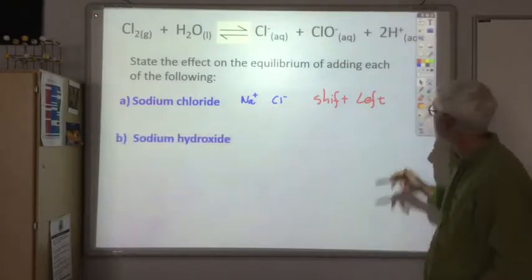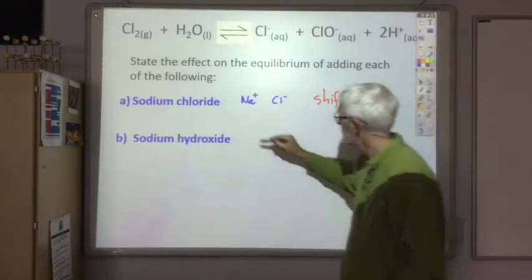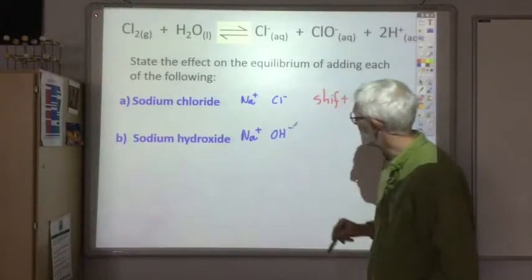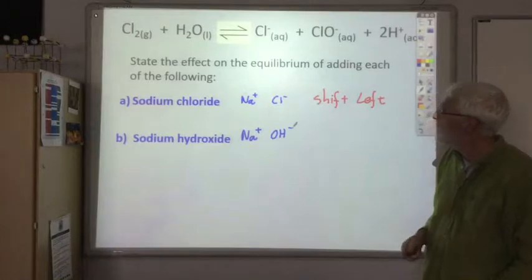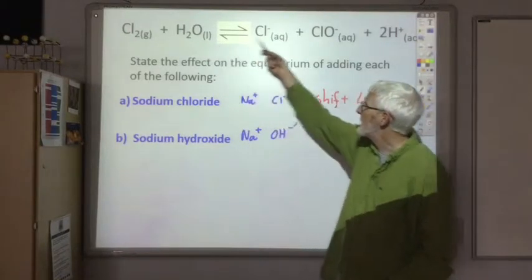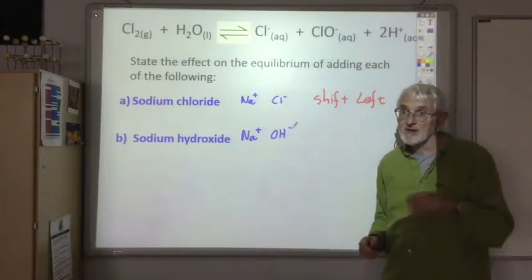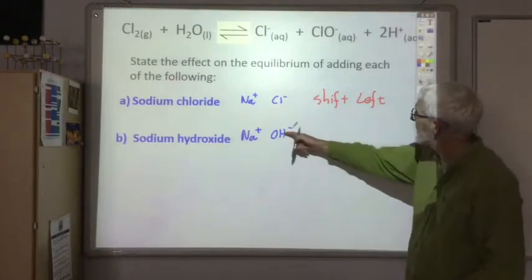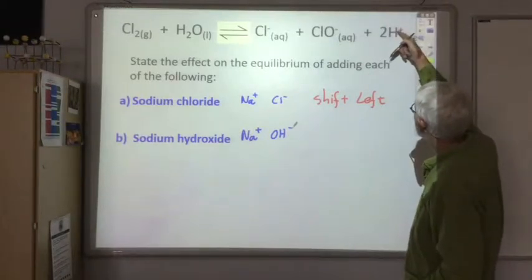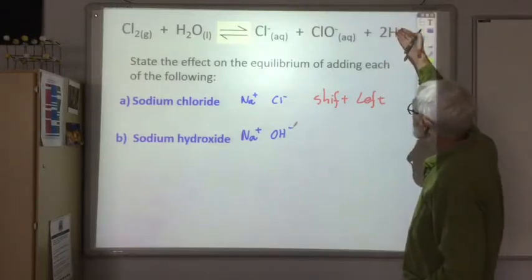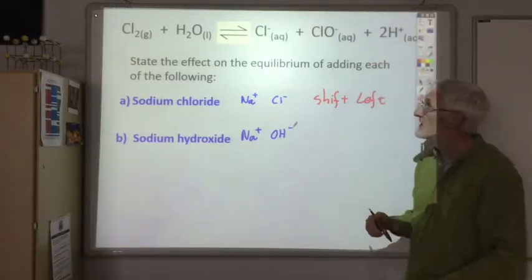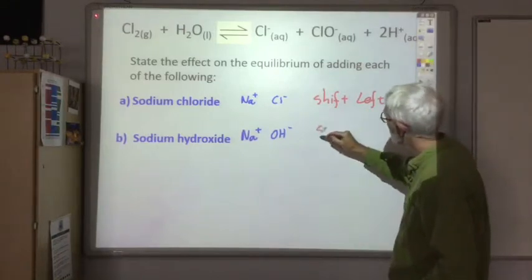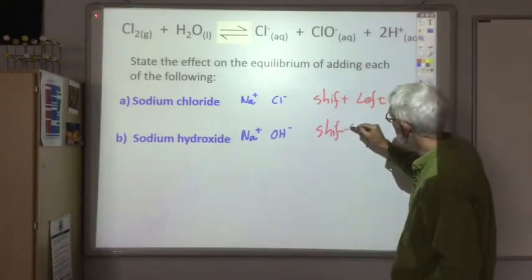If we added sodium hydroxide, so adding Na+ ions and hydroxide ions, well neither of these ions appear in the equation. So next thing, look for neutralisation. Well, hydroxide ions can react with the H+ ions. Removing the H+ ions, so the equilibrium would shift to the right to replace them. This would shift right.